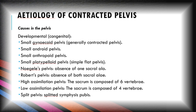The etiology of contracted pelvis includes developmental factors such as congenital or hereditary conditions, which include small gynecoid pelvis, small android pelvis, small anthropoid pelvis, and small platypelloid pelvis (also called simple flat pelvis). Naegele's pelvis involves absence of one sacral ala; Robert's pelvis involves absence of both sacral alae. High assimilation pelvis has a sacrum composed of six vertebrae; low assimilation pelvis is composed of four vertebrae. Split pelvis involves a split in the symphysis pubis area. Among these, small gynecoid pelvis is usually called contracted pelvis.